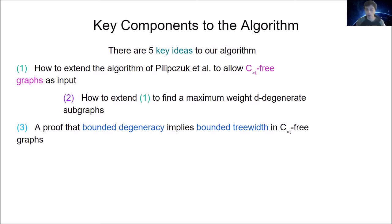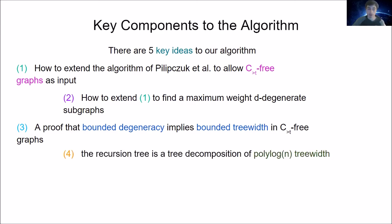The third key idea is a proof that bounded degeneracy implies bounded treewidth on C_{>t}-free graphs. Those familiar with monadic second order logic may be surprised that our theorem involves bounded degeneracy, since MSO₂ logic is usually related to graphs of bounded treewidth. In general, degeneracy is less than treewidth, but in C_{>t}-free graphs, bounded degeneracy and bounded treewidth turn out to be equivalent.